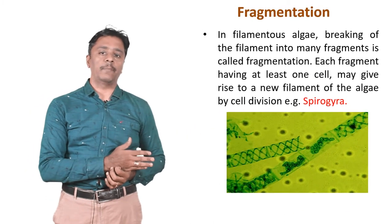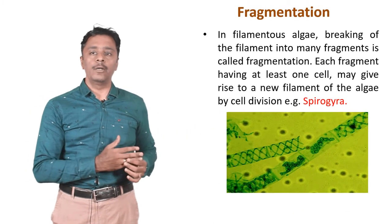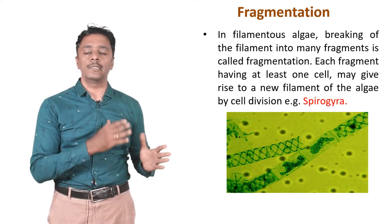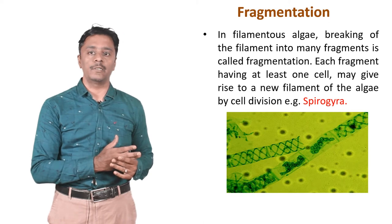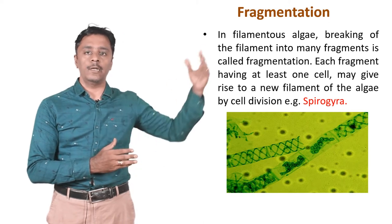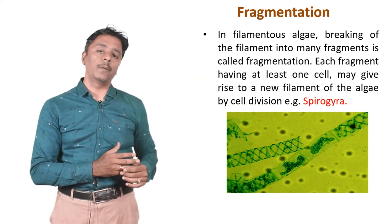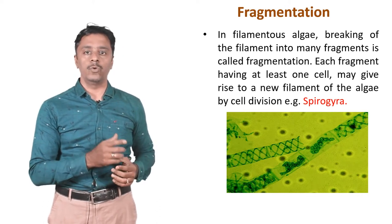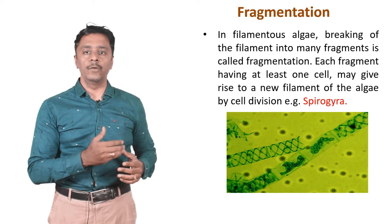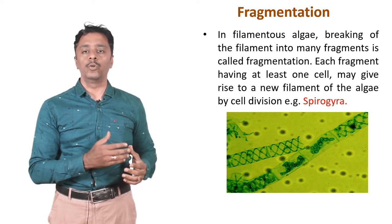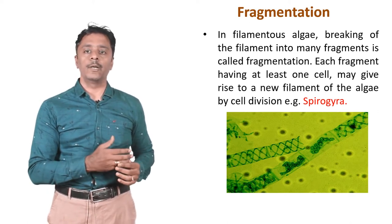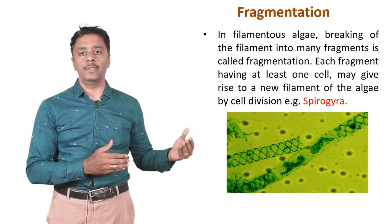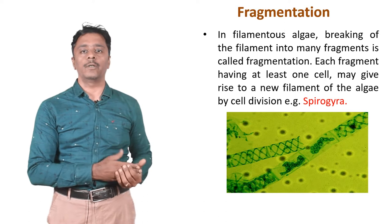The next one is fragmentation. In filamentous algae, the breaking of a filament into many fragments is called fragmentation. This is also a two-mark question. These examples will also come in two-mark questions, and their examples will come in one-mark questions. Please note all these things and prepare yourself for two-mark questions on asexual reproduction and their types, along with all their examples.